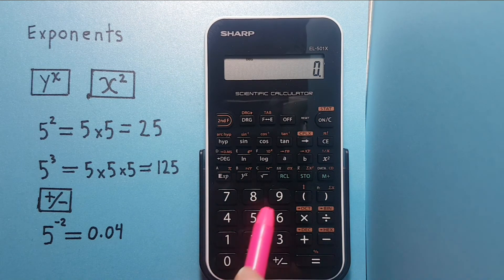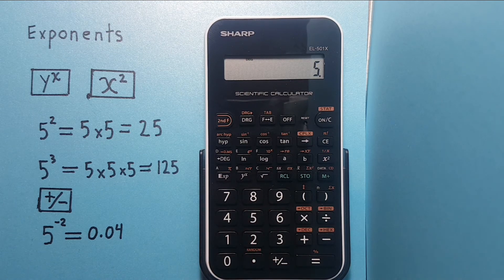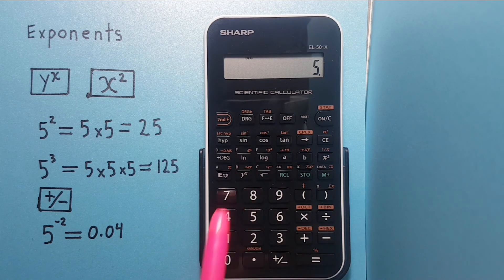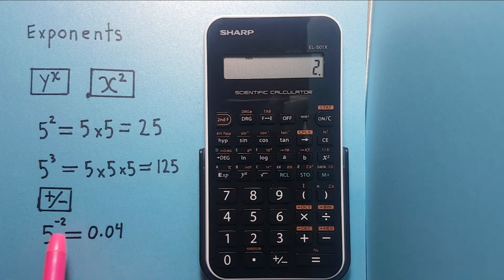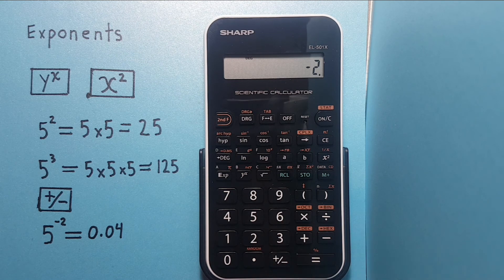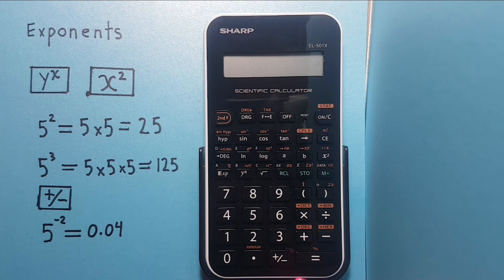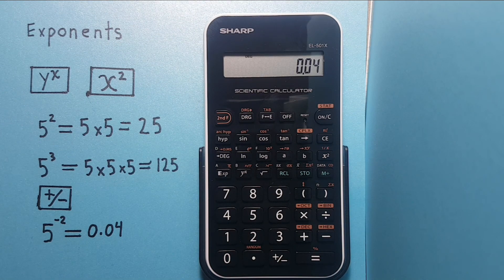So start with 5, y to the x, 2, but since this time is a negative exponent, we then hit the plus minus key to indicate that our 2 is negative, and then equals. And we get 0.04 which is the correct answer.